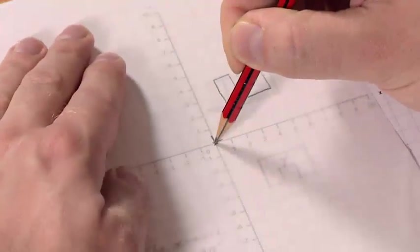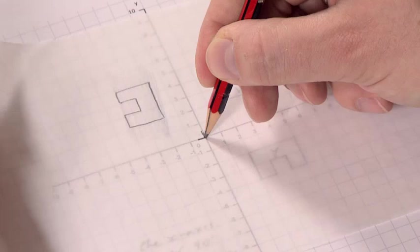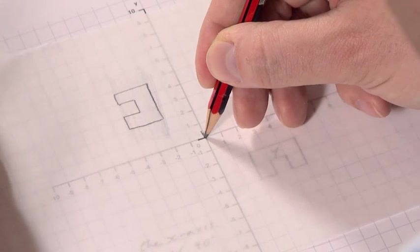Rotation, we're going to rotate 90 degrees. Continue the rotation making sure you don't deviate from that centre of rotation where our pencil is.